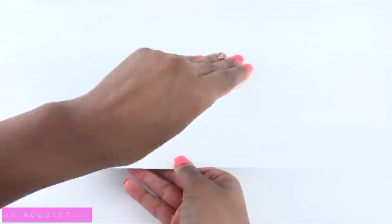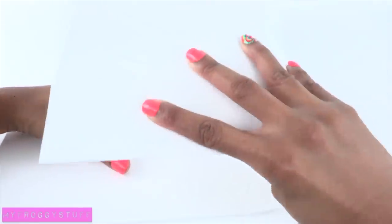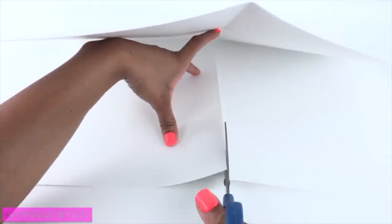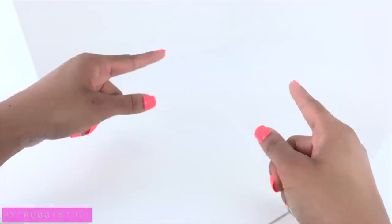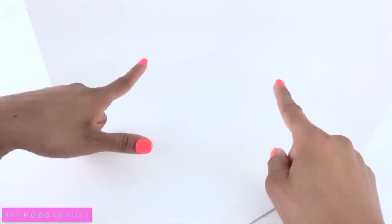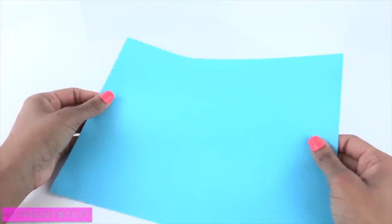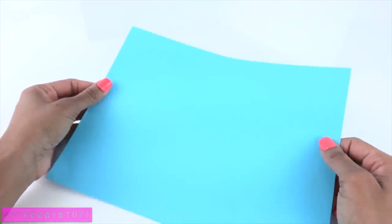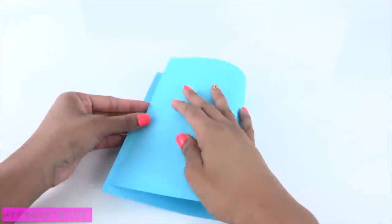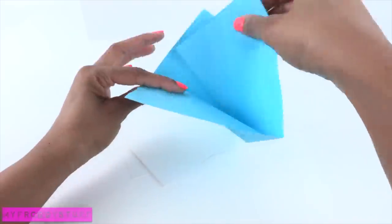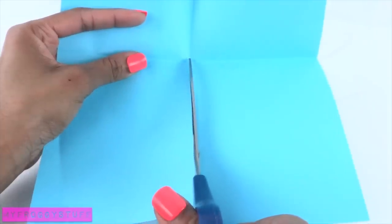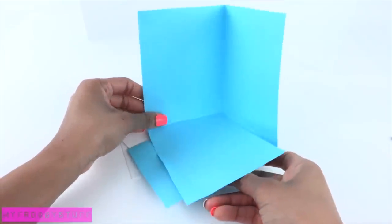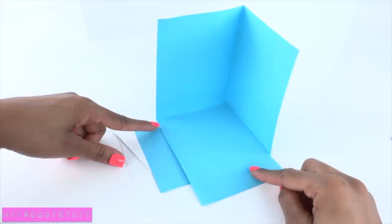I start by folding my poster board in half and then in half again. Open it completely, cut on the center fold up to the center to make our basic folding room. First fold it in half, then fold it in half again, open it up, cut down the fold to the center.